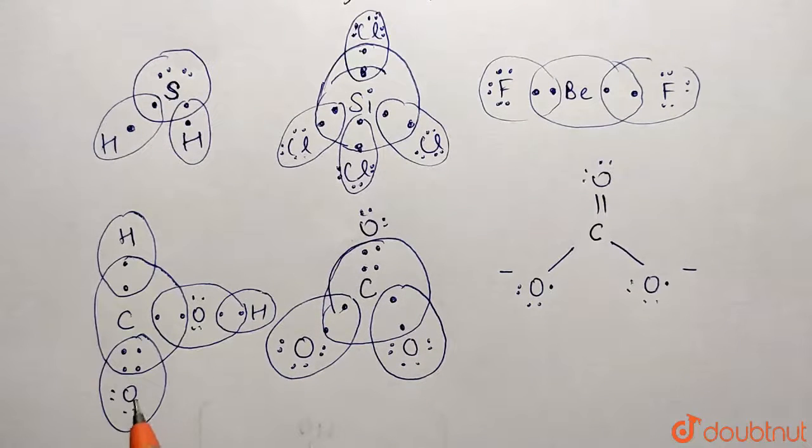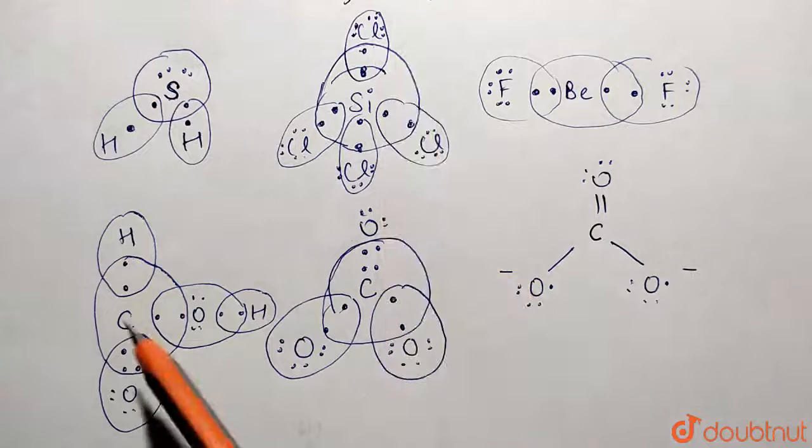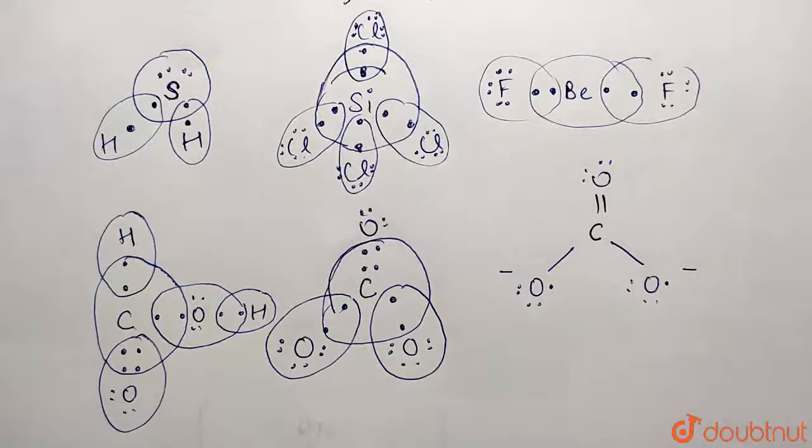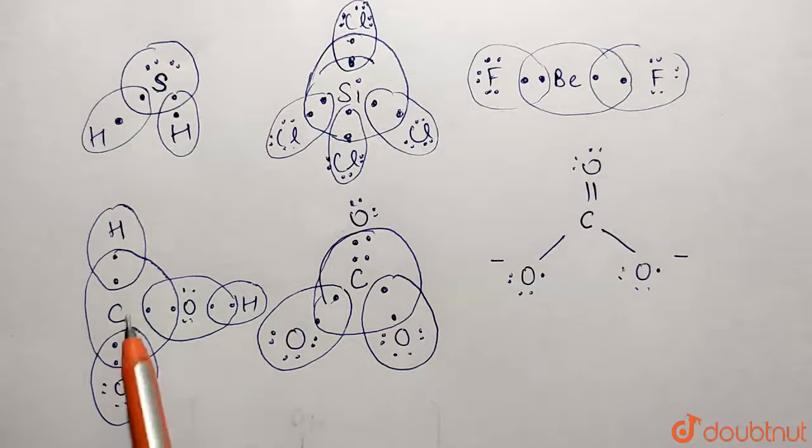This is the representation for HCOOH—H-C double bond O-H. You can easily draw these structures, or better yet, draw the bond line formula first, then convert to Lewis dot structure.